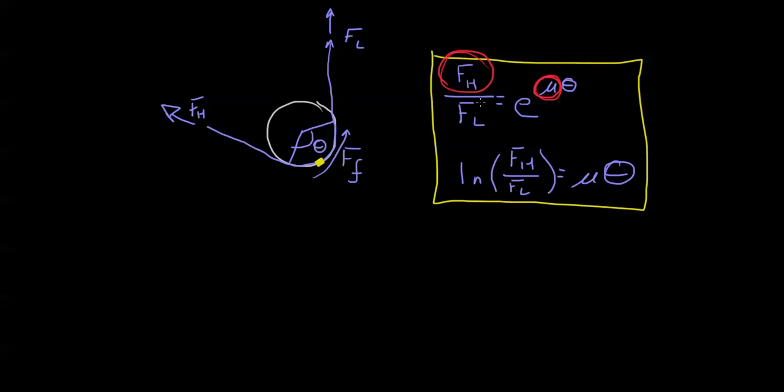That's going to stay the same, which means I either need to pull when that gust of wind comes, I either need to pull with a huge force here. I need to increase my force to keep it from pulling out of my hands or I increase my theta. And if I increase my theta, let's say I went from two to three. Let's say I went from two to three wraps.